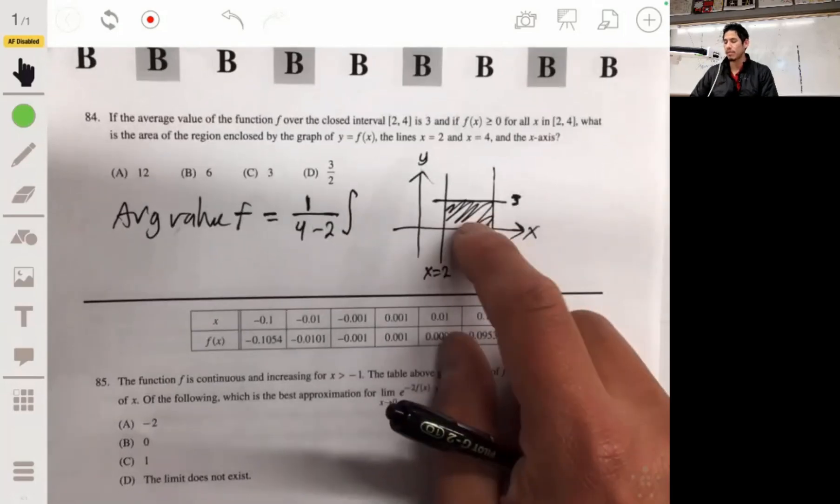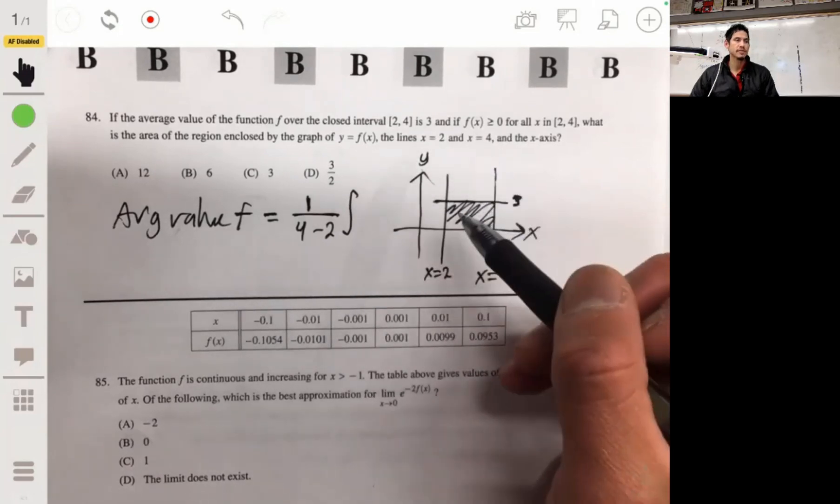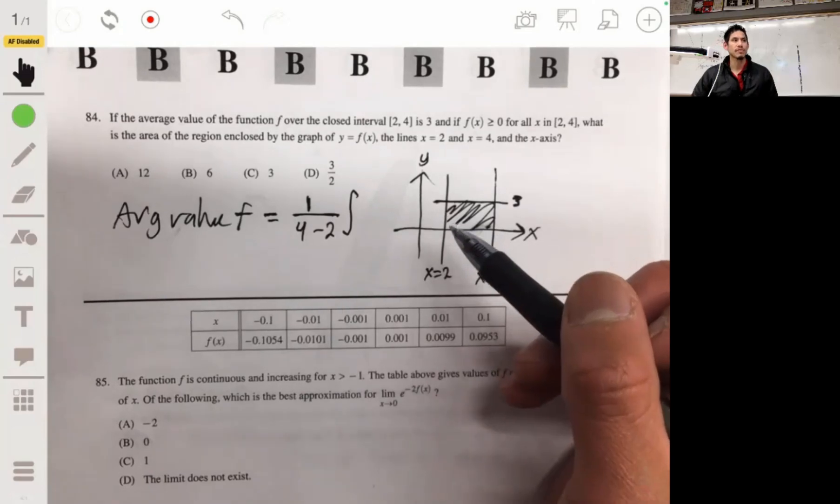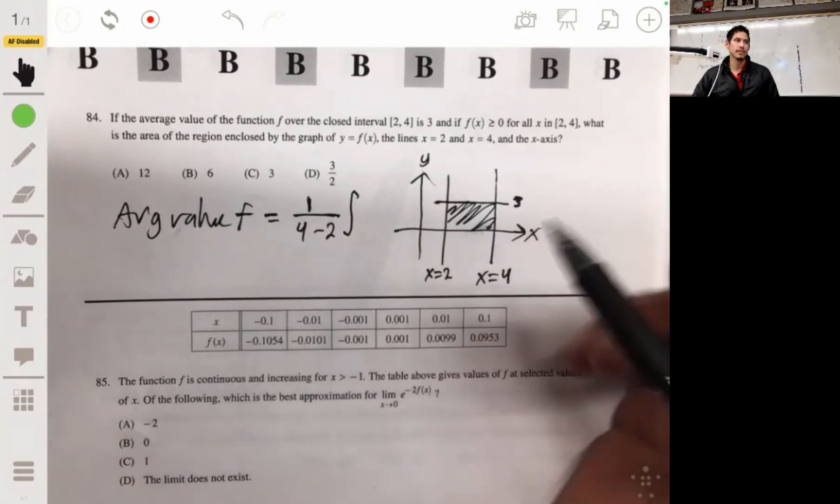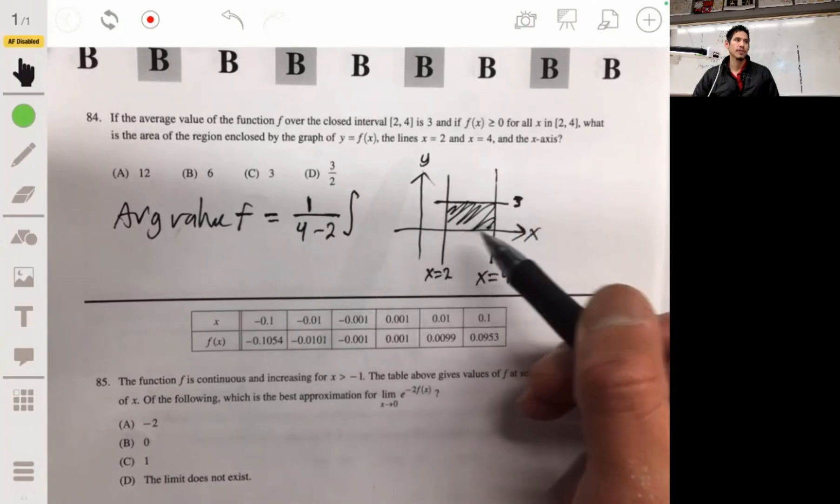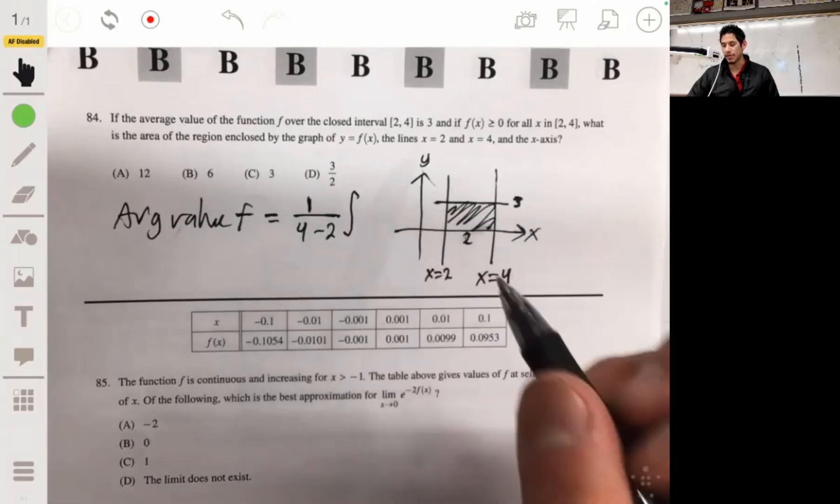I'm not saying this is going to make a rectangle, but if you remember from chapter 4, it's essentially going to be equal to the area of a rectangle where the width is 2 and the height is 3 because that's the average value.